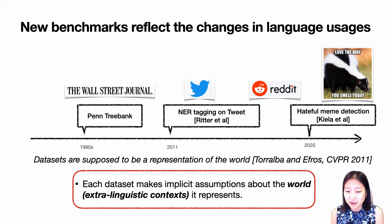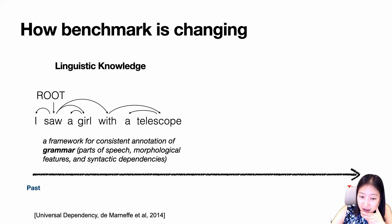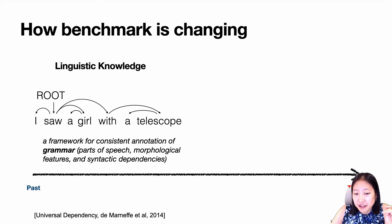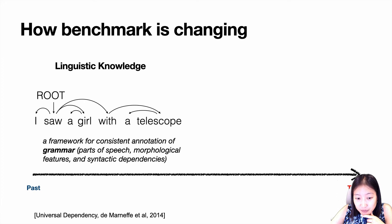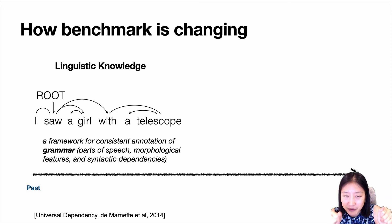Although datasets make implicit assumptions about the world they represent — it's not the world, but the specific world they are modeling. Before, many datasets captured linguistic knowledge, such as dependency parsing, where you annotate grammar, part of speech, morphological features, and syntactic dependencies — datasets like Universal Dependencies and Penn Treebank. These capture what we call linguistic benchmarks.